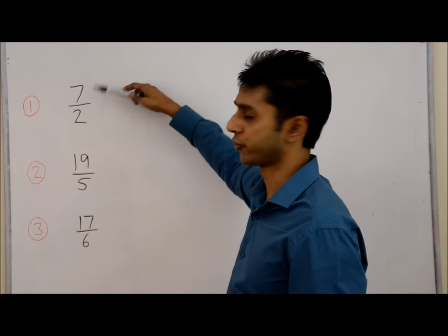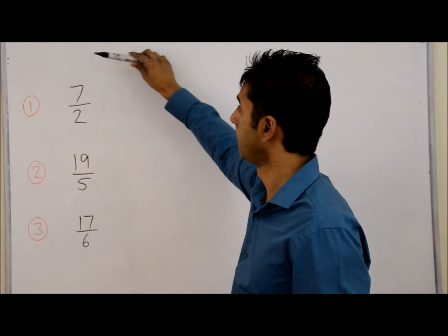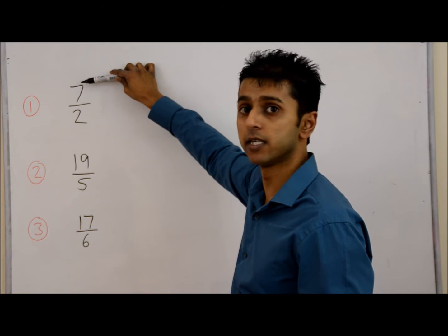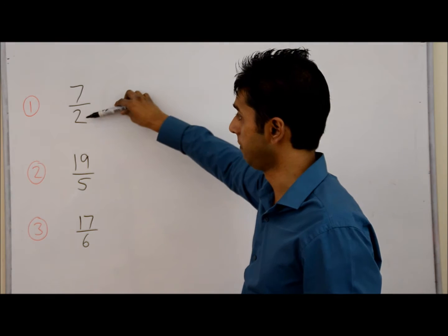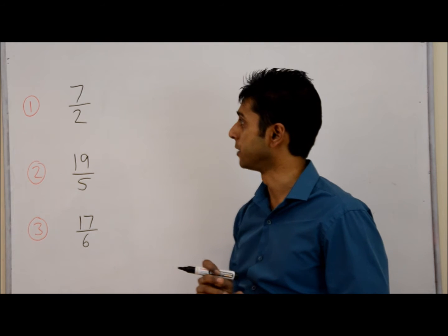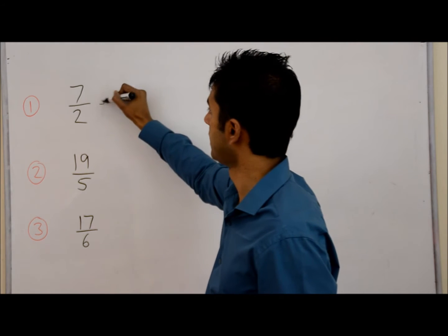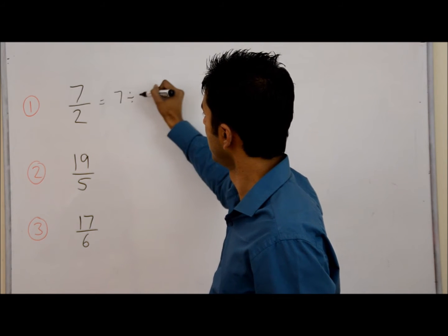So here we have an improper fraction. We know it's an improper fraction because the number on the top, the numerator, is bigger than the number on the bottom, the denominator. And to write it as a mixed fraction, we need to do 7 divided by 2.